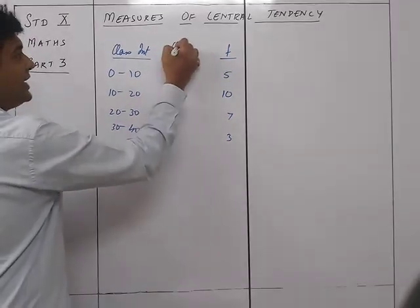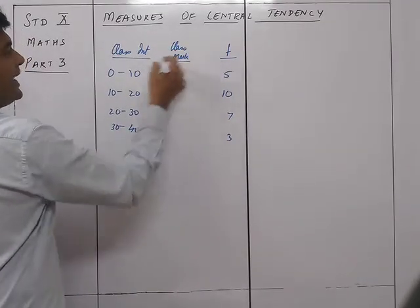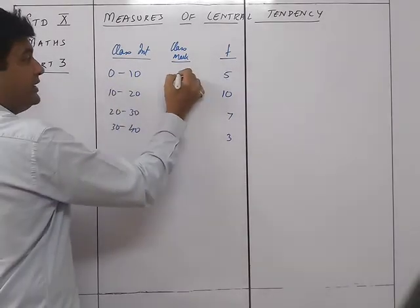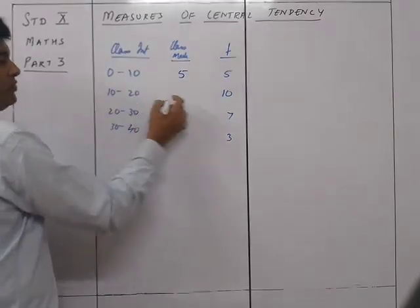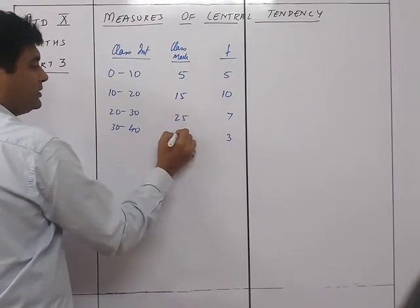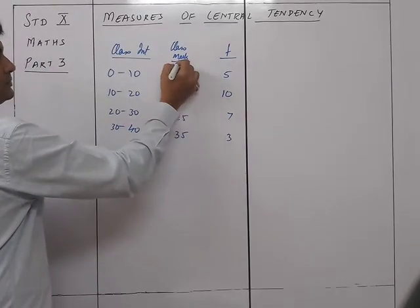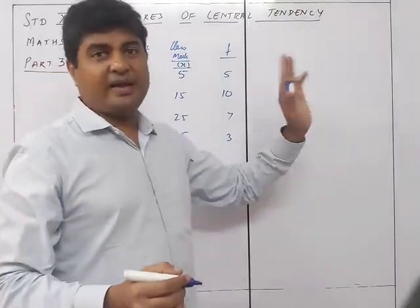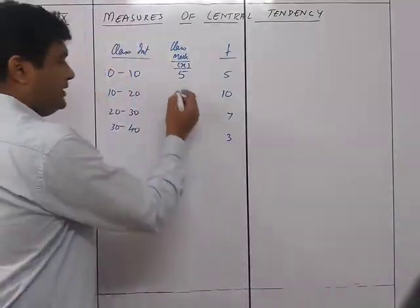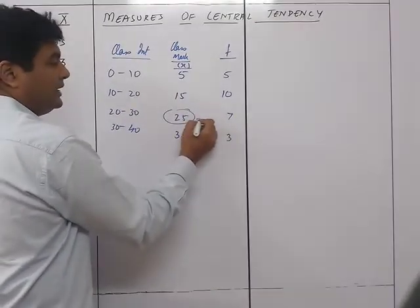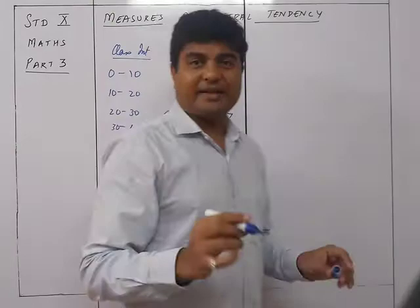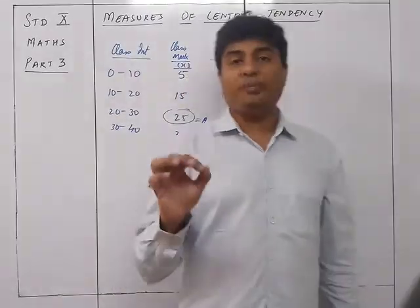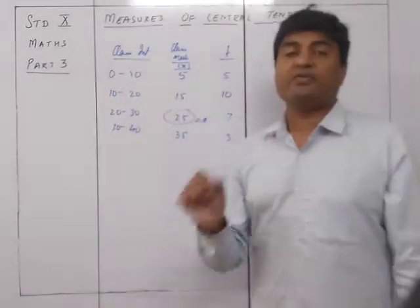X is the class mark. The class mark is calculated as the average of the class boundaries: (10+0)/2 = 5, (20+10)/2 = 15, then 25 and 35. So x represents the class marks. All other columns — fx, fd — remain the same. The only difference between grouped and ungrouped data is that for grouped data you need to find the class mark first.